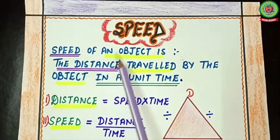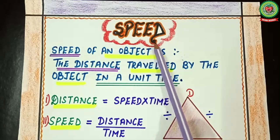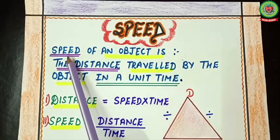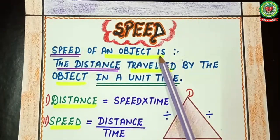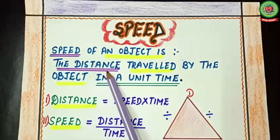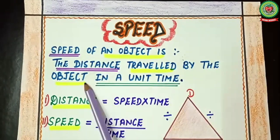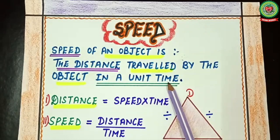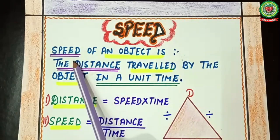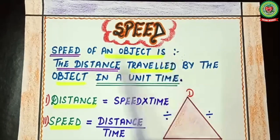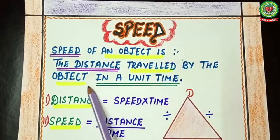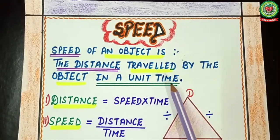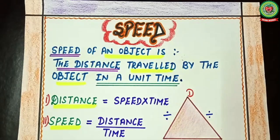First of all we will start with speed. What do you mean by speed? Speed of an object is the distance traveled by the object in a unit time.